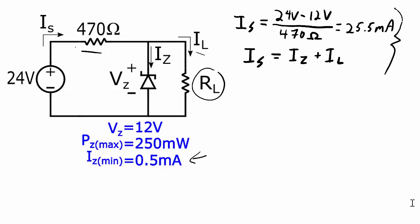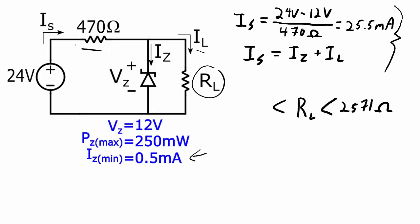So what we know about the load resistor for this zener diode regulating circuit is that it has to be less than 2,571 ohms in order to keep the current through the zener diode low enough so that the zener diode doesn't burn out too quickly. And it has to be greater than 480 ohms in order for there to still be enough current through the zener diode to keep it in regulation and keep that 12 volts across the load resistor. So there you go. That is load regulation for zener diode voltage regulating circuits.